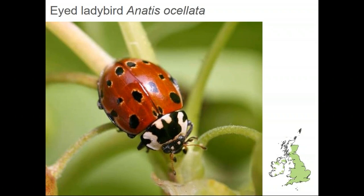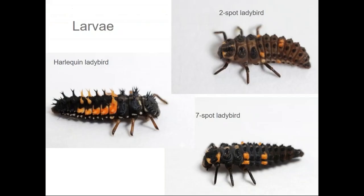The eyed ladybird is the UK's biggest species — bigger than a harlequin, usually around eight millimetres. It's quite dark red with lovely pale rings around the spots, which is a good characteristic to look for, and it has distinctive pronotum markings. It also has black legs, which is useful: if you're unsure whether you're looking at a big red ladybird — harlequin or eyed — the harlequin has brown or red legs whereas the eyed ladybird has black legs. It's normally found on pine and other conifers.